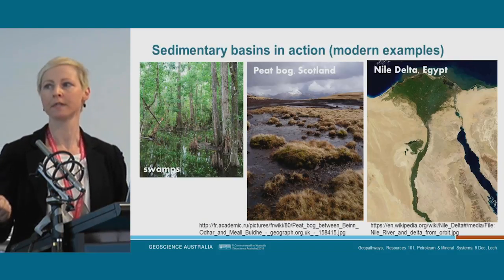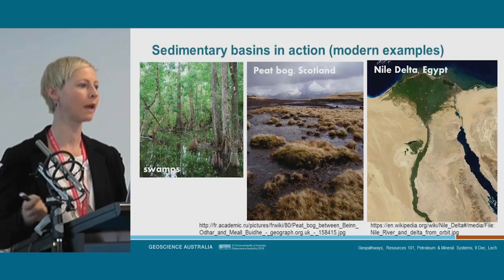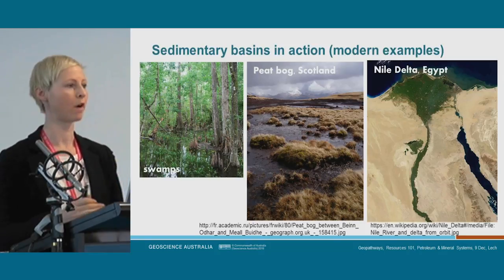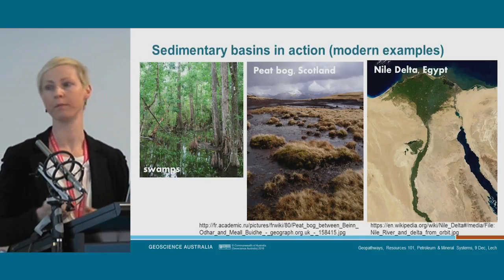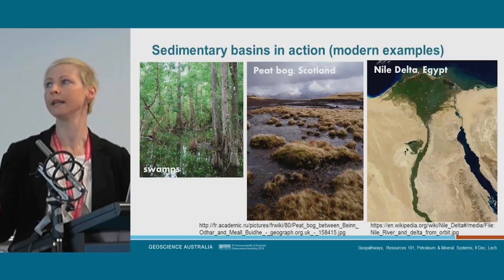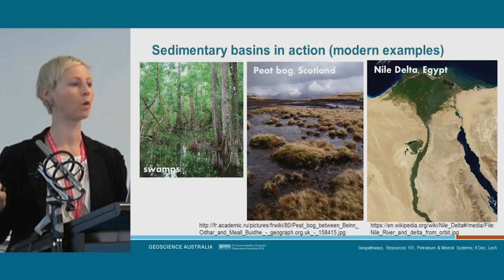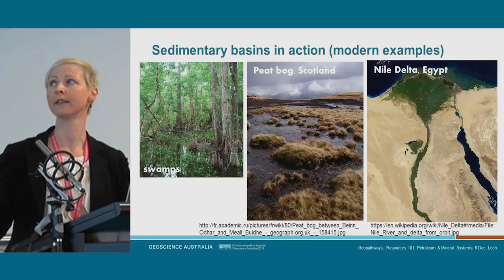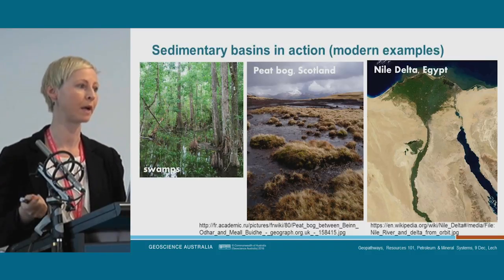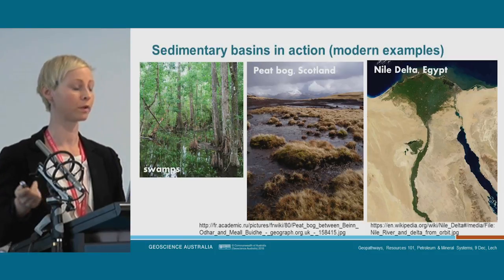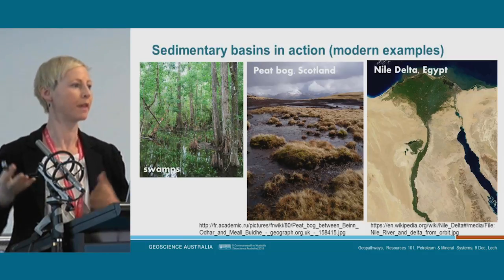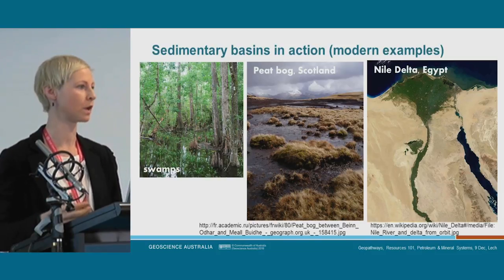We have swamps and peat bogs here, which provide really great organic matter for source rocks. And here we have an example of a delta — the Nile Delta. You can actually see that triangular delta shape where the name comes from. It's the bread bowl for Egypt. But these are the sorts of environments that we go searching for when we're looking for oil and gas.